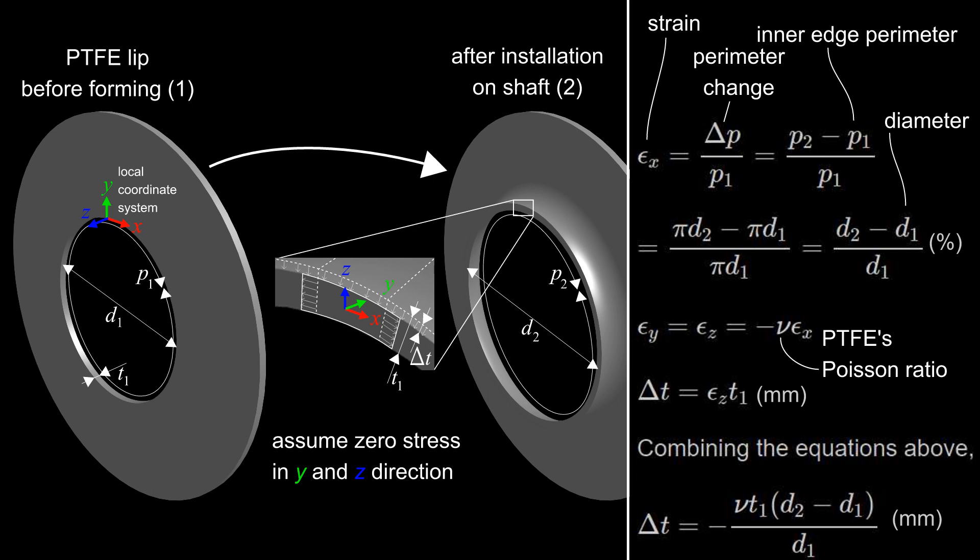The hoop strain epsilon x can be calculated as the total increase of the lip inner edge perimeter delta P divided by the original perimeter P1, in turn as a function of the diameter D1 before forming and D2 after installation.